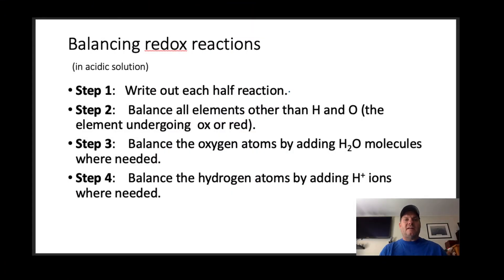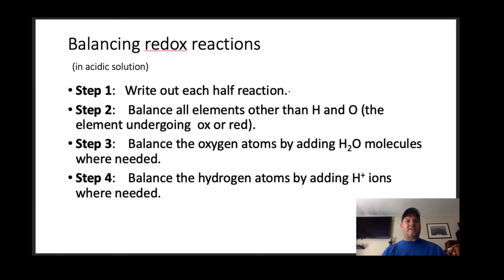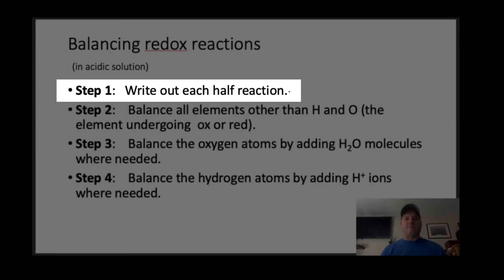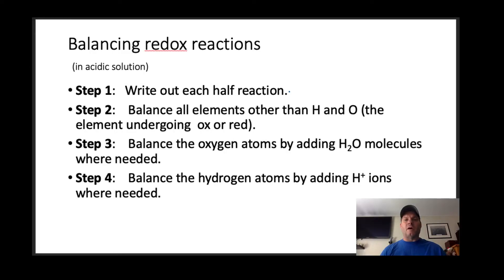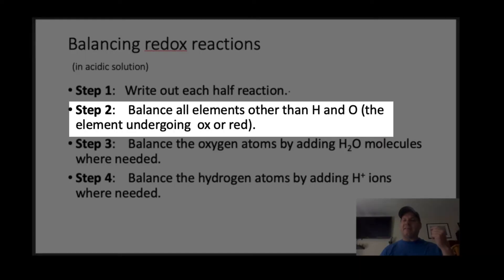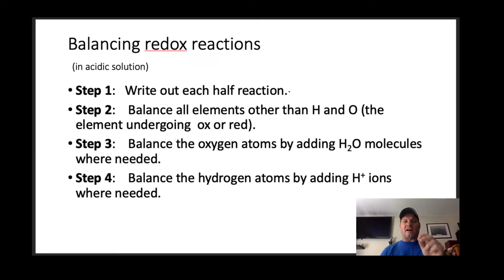We're going to copy down the eight steps to success on balancing redox reactions. Specifically we're going to be looking at those in an acidic solution — we're not going to worry about a basic solution. Please write these down on scratch paper so you can use them as we practice. Step one: write out each half reaction. Step two: balance all the elements other than hydrogen and oxygen — balance the element that is undergoing the oxidation or reduction.